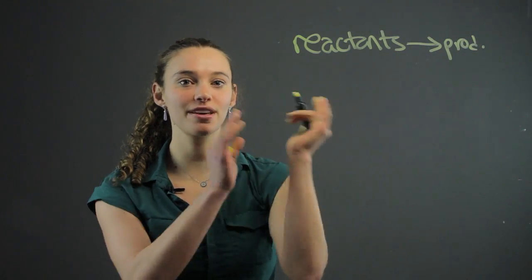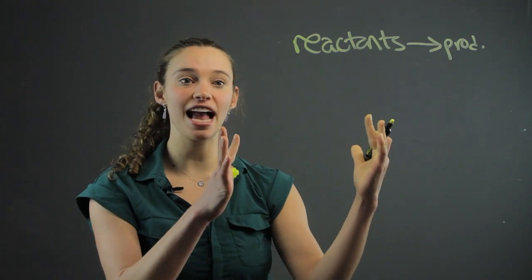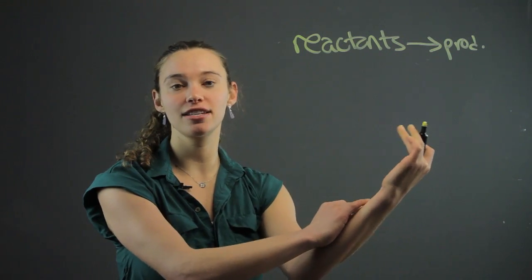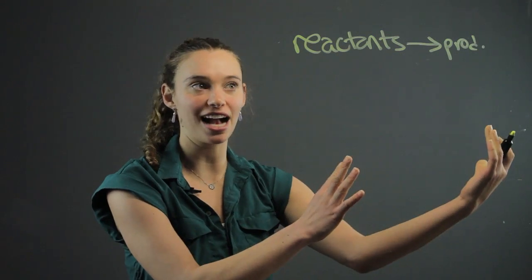It's always going to have an arrow showing the reactants to the products. There can be multiple reactants and just one product, or there can be one product decomposing to many reactants.